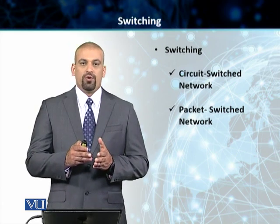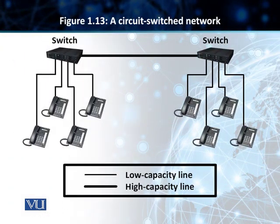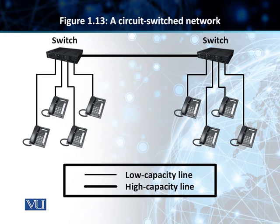Looking at the slide, as you can see, a circuit switched network is a network in which there is a circuit which is always existent between the two switches. In order to initiate the communication, we need to establish a circuit first. A circuit is established when communication is required and it is torn down when the communication is over between the two switches. The switch can only make the circuit active or inactive.